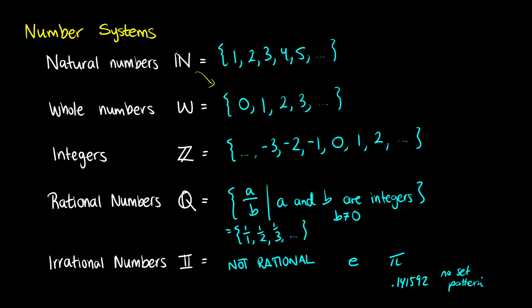If there is a set pattern — say if we have 2.178178178 and that 178 continues to repeat — then that is a rational number because it has a repeating pattern. If it repeats, it is rational. We use Q to denote the rational numbers. If it does not repeat, then it is irrational. Some books will use a Q with a prime or complement symbol to mean things not in Q, but I will use I.